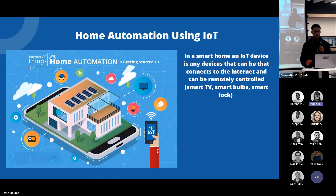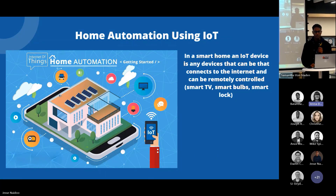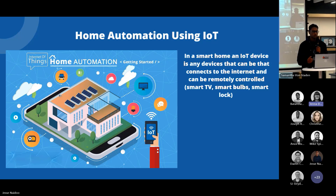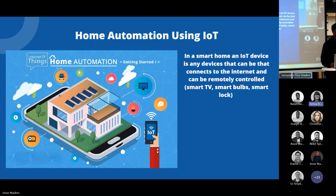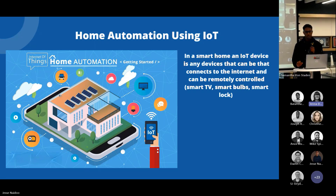For home automation using IoT, most IoT devices connect to the Internet. This allows them to communicate with other IoT devices and with the cloud. The purpose of an IoT device is so that it can be remotely controlled — through your phone, your laptop, or anything like that. Most IoT devices include smart TVs, smart bulbs, and smart locks that can be controlled.